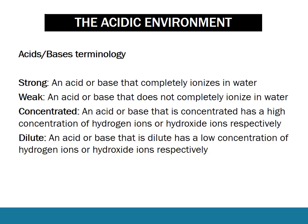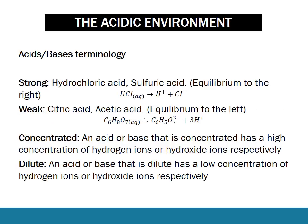Some terminology now. A strong acid is one that completely ionizes in water, and a weak acid does not completely ionize in water. You need to know that some acids are strong — such as sulfuric acid, nitric acid, and hydrochloric acid — and some are weak. A concentrated acid just has a high concentration of hydrogen ions, and a dilute acid has a low concentration.